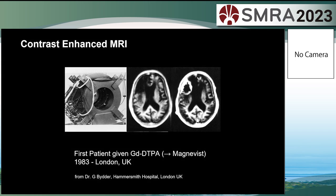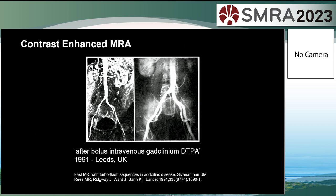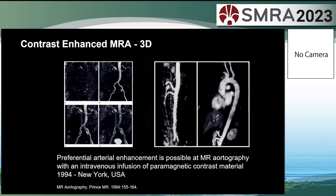The first contrast-enhanced MRA — not angiography, but this is 1983 in London. The first contrast-enhanced MRA was in Leeds, UK, in 1991, published in The Lancet by Mohan and John Ridgway from Leeds University. But it was two-dimensional. The first 3D contrast-enhanced MRA paper we really refer to is from Martin Prince in New York, in 1994.